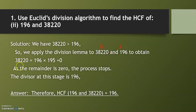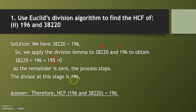Now start dividing. When you divide 38,220 by 196, you get the quotient as 195. The division process will stop when the remainder becomes zero, and the last divisor will be 196, which is the HCF.